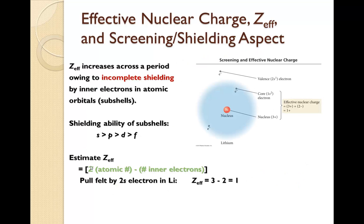So let's look at that a little bit deeper. However, the Z effective increases across the period going left to right, owing to incomplete shielding by the inner electrons in atomic orbitals. So in other words, the electrons are surrounding the nucleus and they're shielding the outside electrons from that pull from the protons. However, as you go from left to right, that amount of shielding that's occurring gets smaller and smaller. The shielding abilities are that S is the greatest or the best at shielding, while F is the worst.